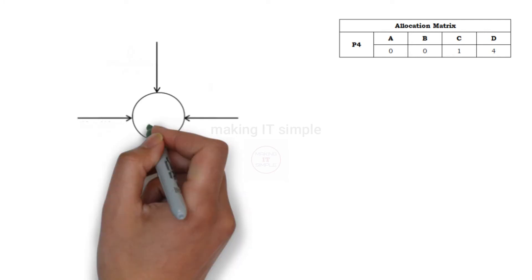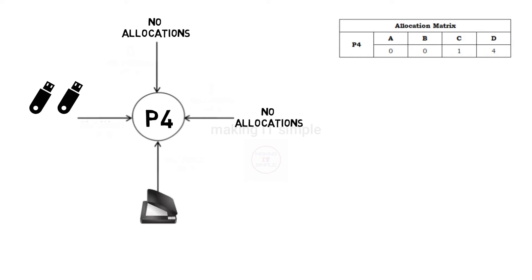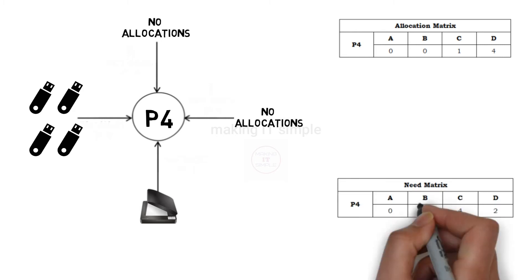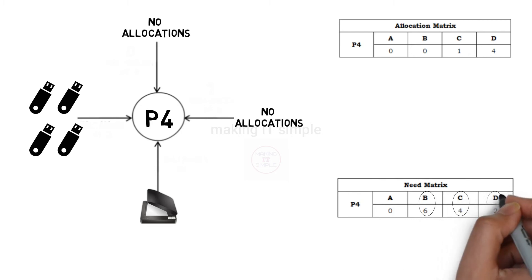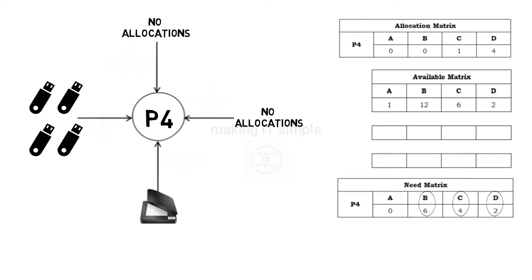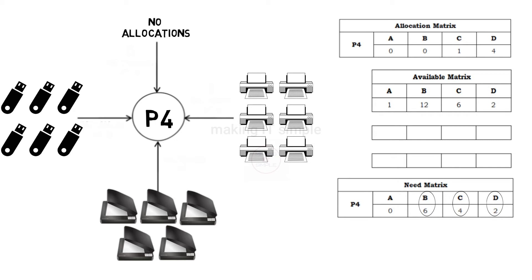According to the allocation matrix, process P4 already has no instances of resource A and B, 1 instance of resource C, and 4 instances of resource D. It requires 6 instances of resource B, 4 instances of resource C, and 2 instances of resource D according to the need matrix. And we have the availability according to the available matrix. So we will provide 6 instances of resource B, 4 instances of resource C, and 2 instances of resource D from available resources.